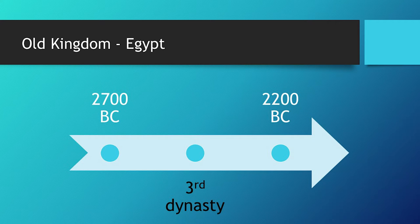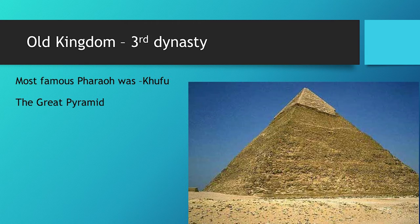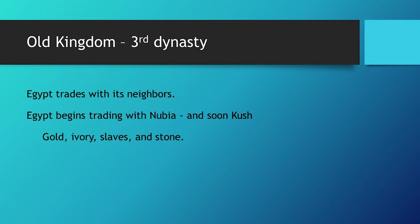The Old Kingdom: it is 2700 BC to 2200 BC, roughly. This is when they're going to build the pyramids. Notice that the numbers are going down because we're moving towards zero — I know that's kind of strange. The Great Pyramid is built by the Pharaoh Khufu. In the Old Kingdom, Third Dynasty, Egypt starts trading, and when you trade, you get wealthy. They're going to trade with their neighbors to the south in Nubia and in Kush — gold, ivory, slaves, different stones and stone materials.